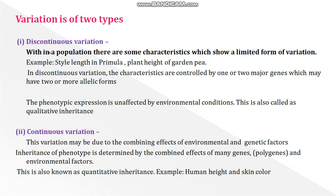The phenotype expression in discontinuous variation is unaffected by environmental conditions, and it is otherwise known as qualitative inheritance. The second type is continuous variation, which may be due to the combining effects of environmental and genetic factors. The inheritance of phenotype is determined by the combined effects of many genes (polygenes) and environmental factors. Continuous variation is otherwise known as quantitative inheritance. Examples: human height and human skin color.